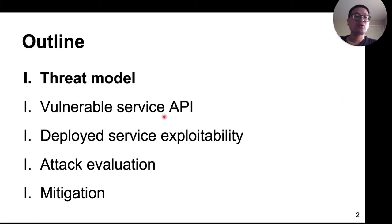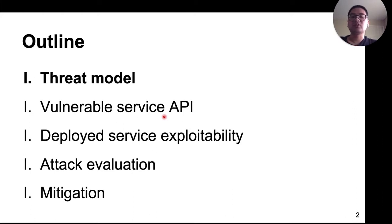In today's talk, let me first introduce the threat model of our work, then talk about the vulnerability we identified in blockchain RPC services API that leads to a denial of service attack. Then I'd like to discuss whether real-world RPC services are vulnerable to this attack, and finally talk about the evaluation results of our attack. We also propose some mitigations.